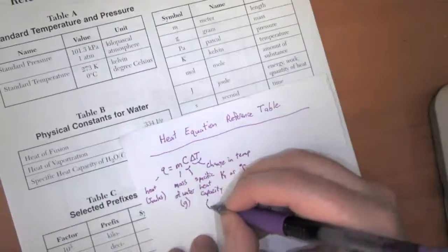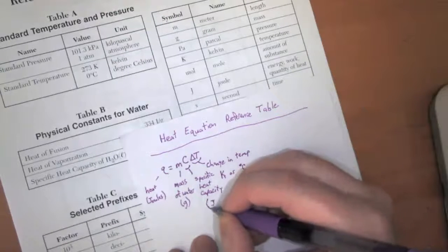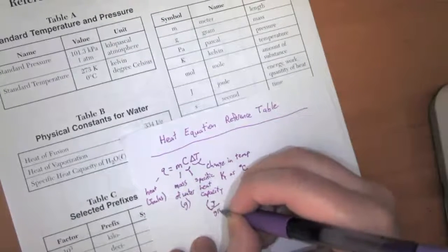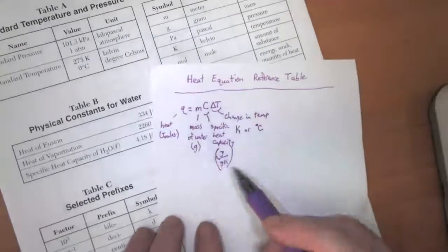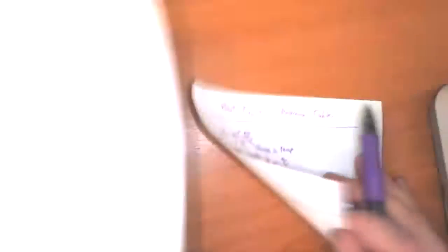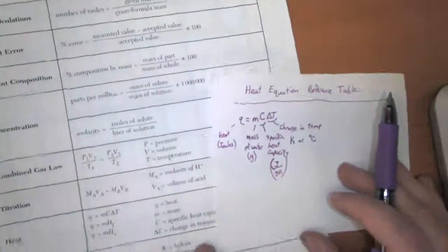All right, so that's measured in joules per gram Kelvin. All right, so that is the heat equation when you're heating water or cooling water.